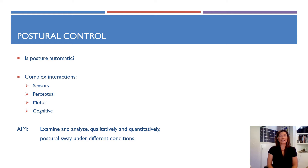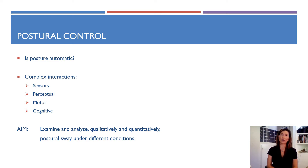An upright posture is often considered an automatic function requiring little overt attentional control. However, the reality is that postural control involves complex interactions between sensory, perceptual, motor and cognitive components. This complexity is observed as people age, where a deterioration in all these categories often leads to reduced postural control, observed as increased postural sway and more frequent and severe falls. In this lab, we examine and analyse qualitatively and quantitatively postural sway under different conditions, altering the available sensory information and observing postural balance, paying particular attention to motor movement strategies.